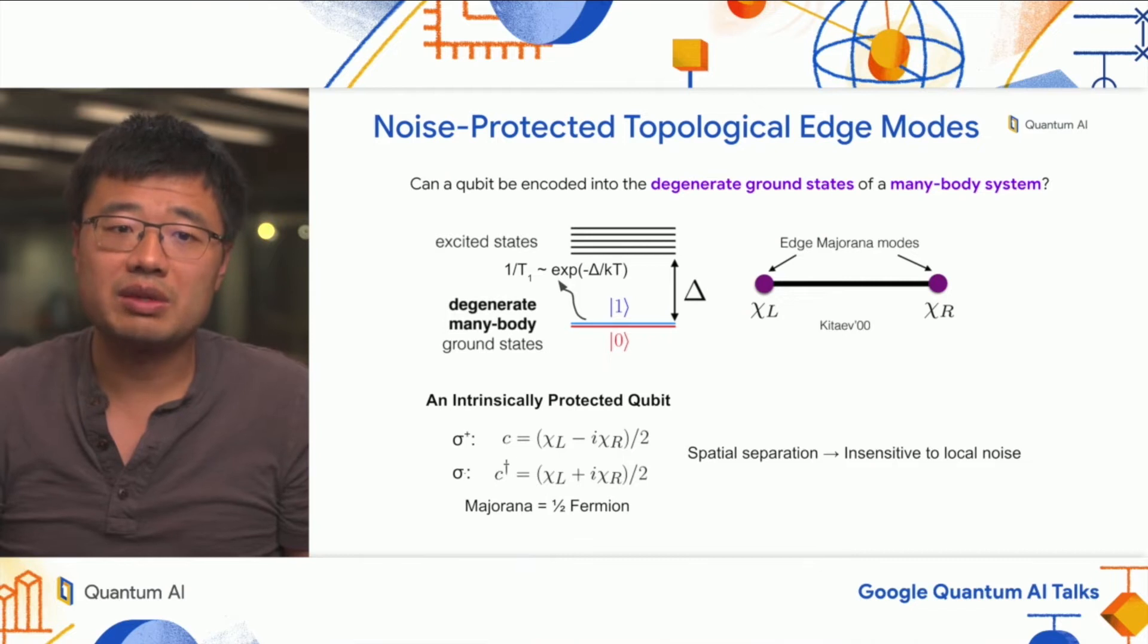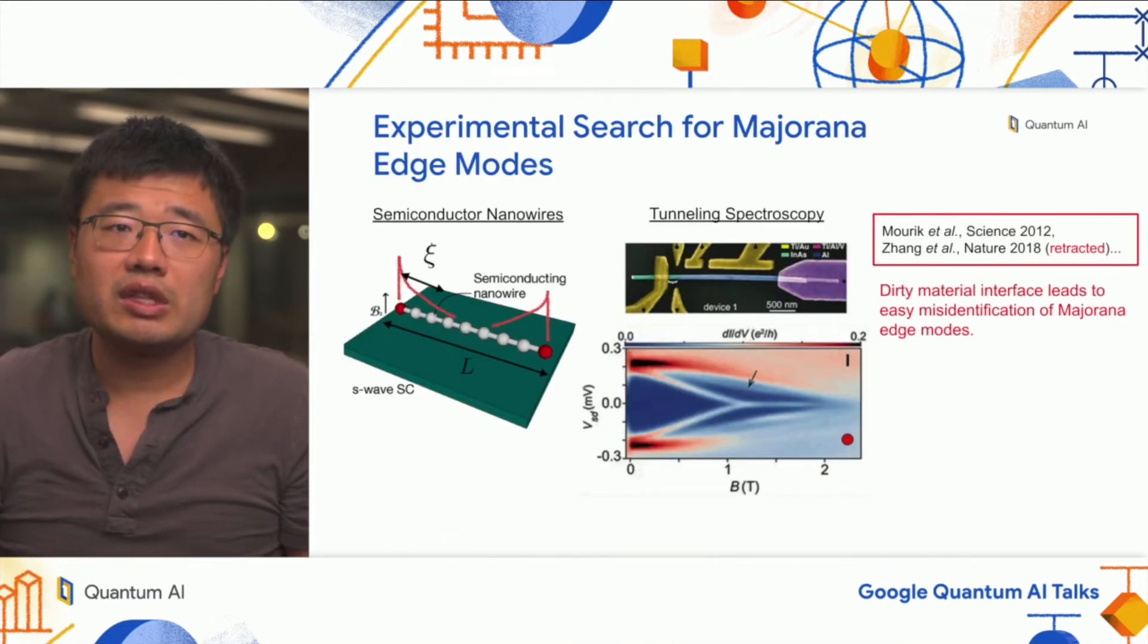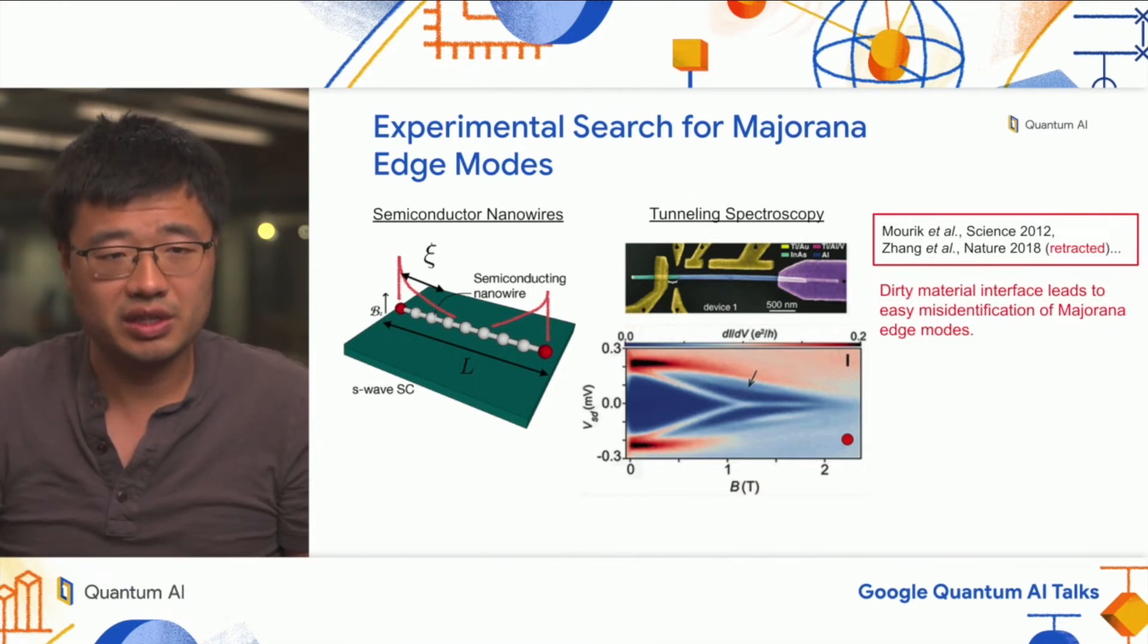In a simple picture, if the temperature of the system is low enough, then transitions between the ground states and the rest of the levels are forbidden. Therefore, these states have a very long lifetime or T1. A prototypical example is the Kitaev chain, where you have two operators called Majorana edge operators chi-left and chi-right. These are like a combination of fermions but locally separated. You can define raising or lowering operators for the qubit using these Majorana operators, and because they're spatially separated, local noise cannot perturb the global state. Therefore, you have a qubit that's nominally insensitive to local noise.